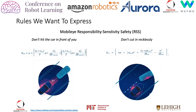Rules are another type of expressive priors that are more commonly adopted as objectives or constraints in planners of the ego vehicle. Here I'm showing two rules from the Mobileye RSS. For simple rules such as the ones presented here, one can design functions that accurately express them with relatively less effort. However, when the number of rules becomes large and the complexity of each rule increases, it can be a challenge to provide a formalism that conveniently expresses the rules and have them interact in a coherent manner.